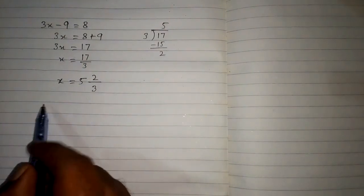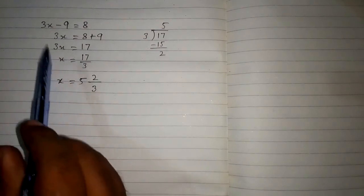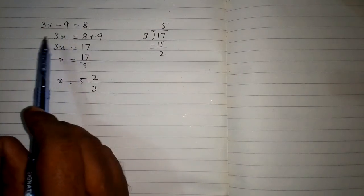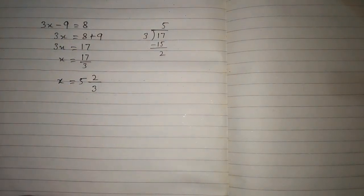5 whole 2 upon 3, and this 5 whole 2 upon 3 is the solution of the given equation which is 3x minus 9 is equal to 8.